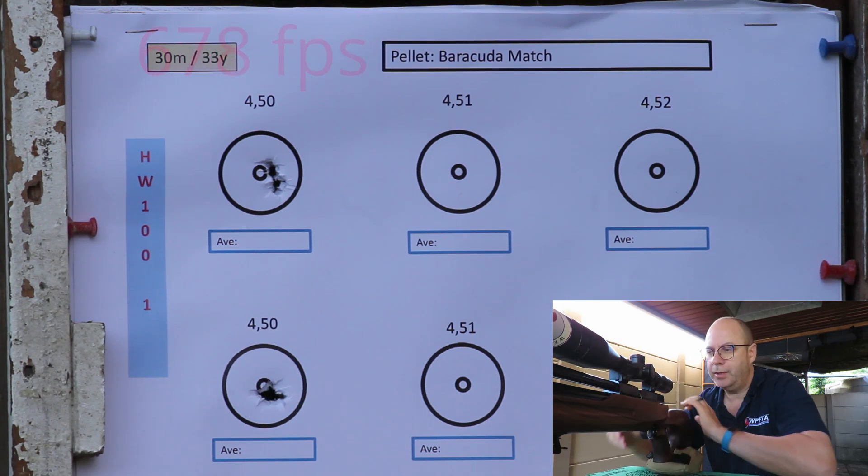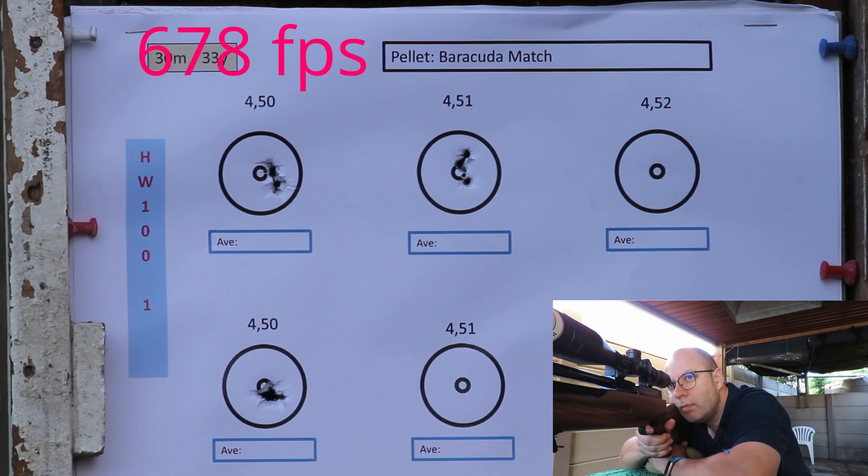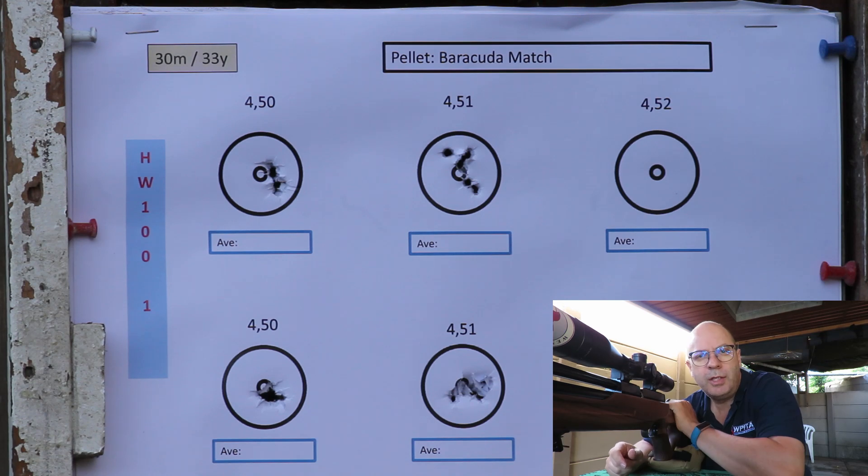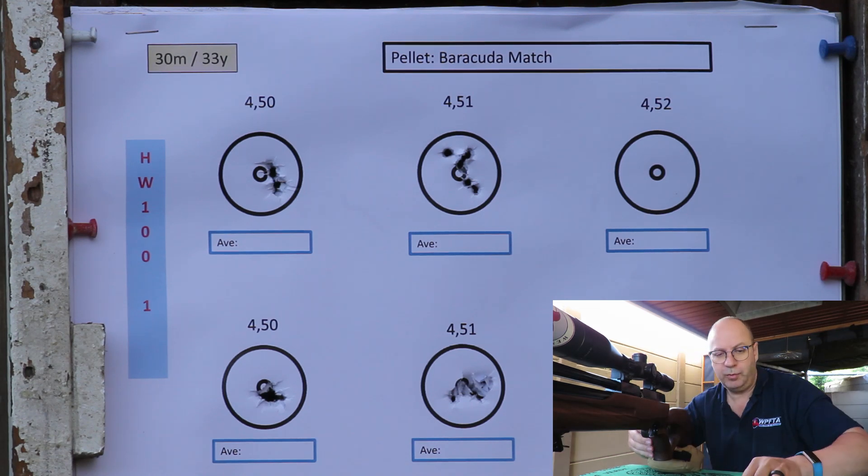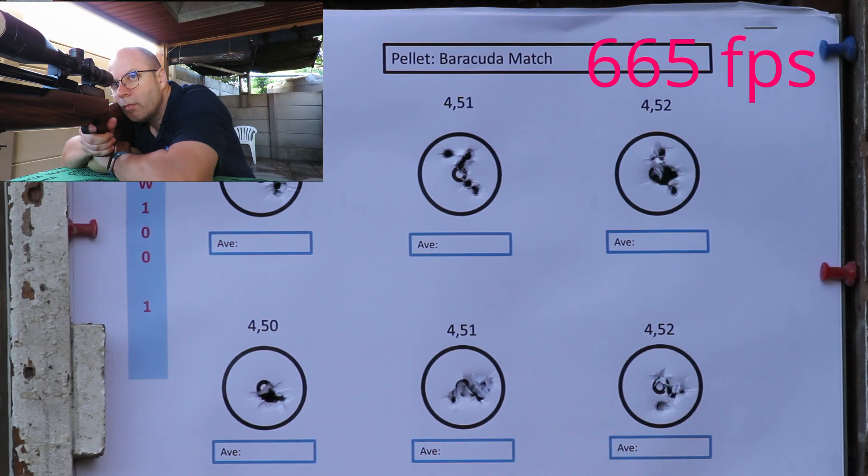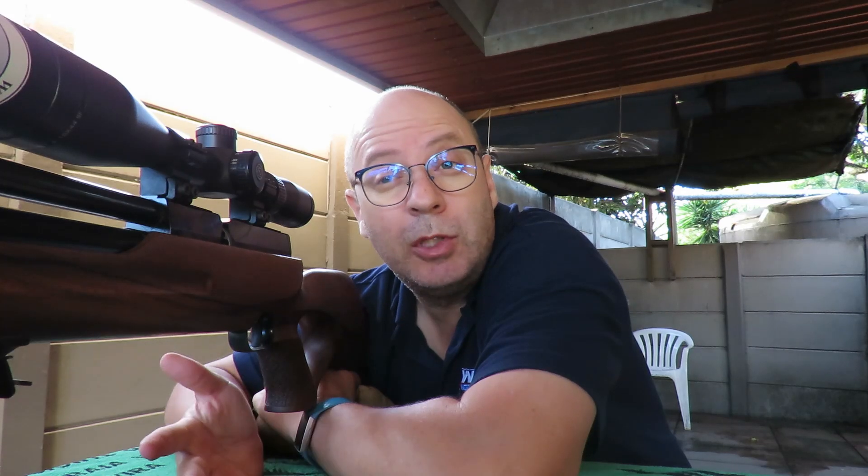Next up, 4.51. Last one in the HW1 series, and this is the 4.52s. All right, that was interesting. Some of them opened up a little bit more, some a little bit tighter. I had a look at the chronograph, I couldn't see a massive difference in speed between them, so the final say will be in the measurement which I will do just now.